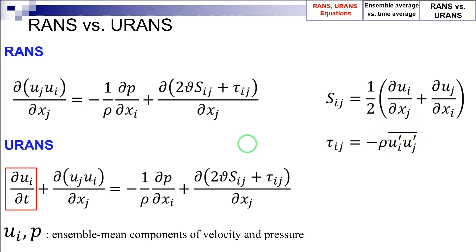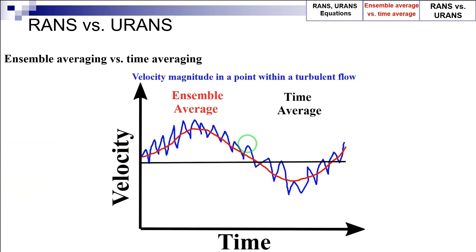It is crucially important to note that the RANS and URANS frameworks are based on ensemble averaging, not time averaging. To understand the difference between ensemble averaging and time averaging, this figure here shows the ensemble average together with the time average of the velocity magnitude in a point within a turbulent flow with respect to time. Therefore, as can be inferred from this figure, the ensemble average will, in general, vary with time, unless the turbulent flow is temporarily stationary.